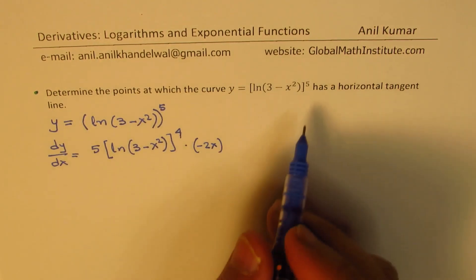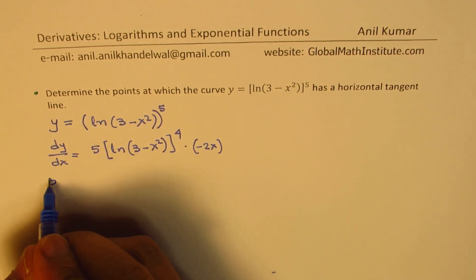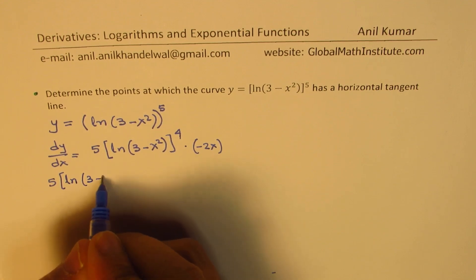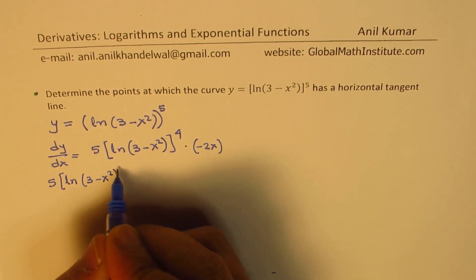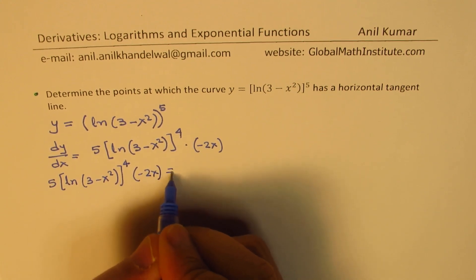Now, for a horizontal tangent, that should be zero. So we get 5 times ln of 3 minus x squared to the power of 4, times minus 2x, should be equal to zero.